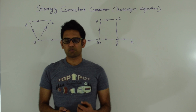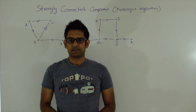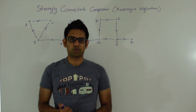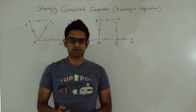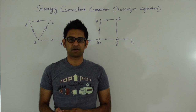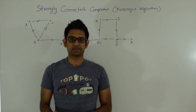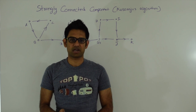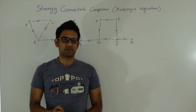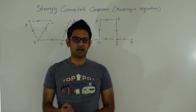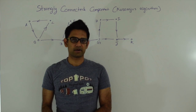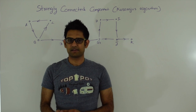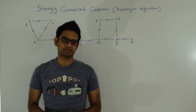So how do we find strongly connected components? There are a couple of algorithms to find it. One of them is Kosaraju's algorithm, which we're going to discuss today. It's a two-pass algorithm — it goes through the graph two times. In the next section let's see how this algorithm works, why it works, and then we'll look at the code.